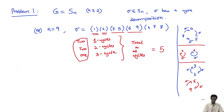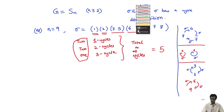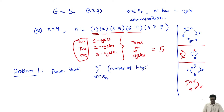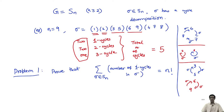So here is Problem 1. Prove that if you take the sum over all elements of S_n of the number of 1-cycles in sigma, this sum will always give the answer n factorial. The sum of the number of 1-cycles of sigma, summed over all sigma in S_n, equals the order of the group S_n, which is n factorial.